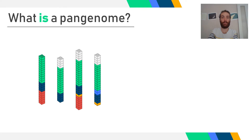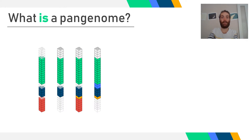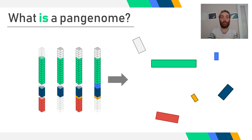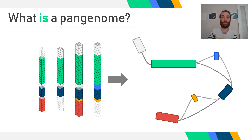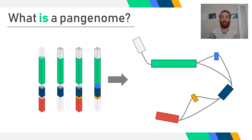Here is an example. Let's say that these four columns are genomes. Each of them has sequenced chunks that might be shared between them all. These chunks, when identified, can be added in a graph as nodes. Then, the succession of the chunks within the first genome allows us to link the green node to the blue node, and then the blue node to the red node. Considering the second genome will add the link from the white node to the green node.